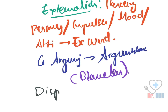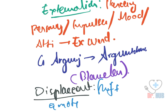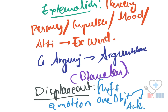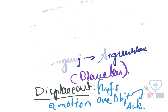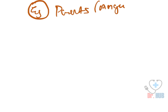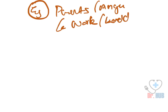Then we look at displacement. Displacement is the shifting of emotion about one object or individual onto another. An example is getting angry at your parents because you had a bad day at work. This is an example of displacement.